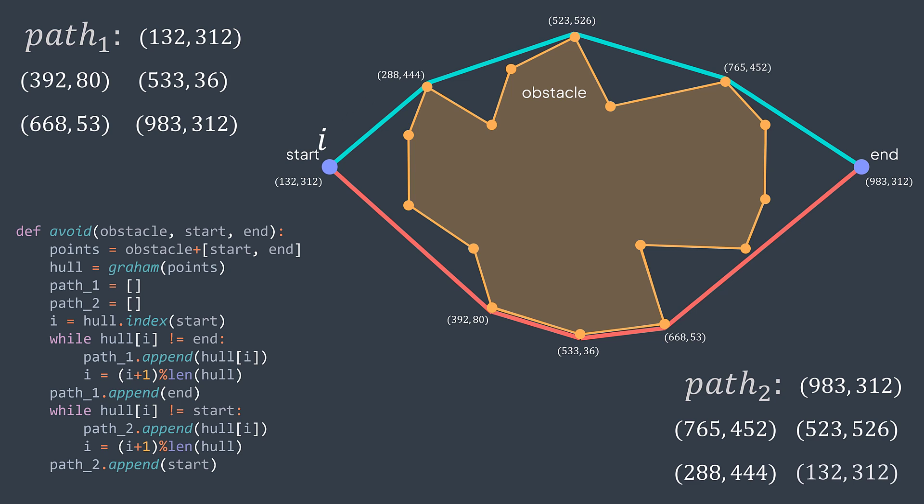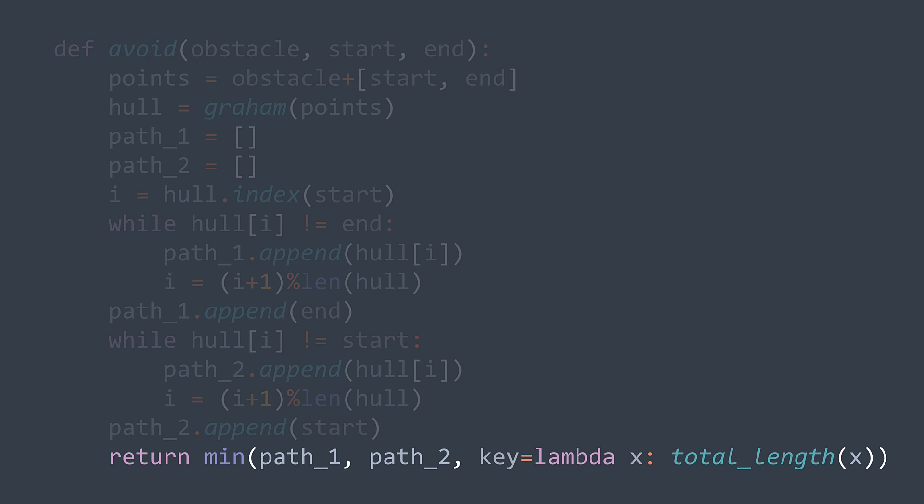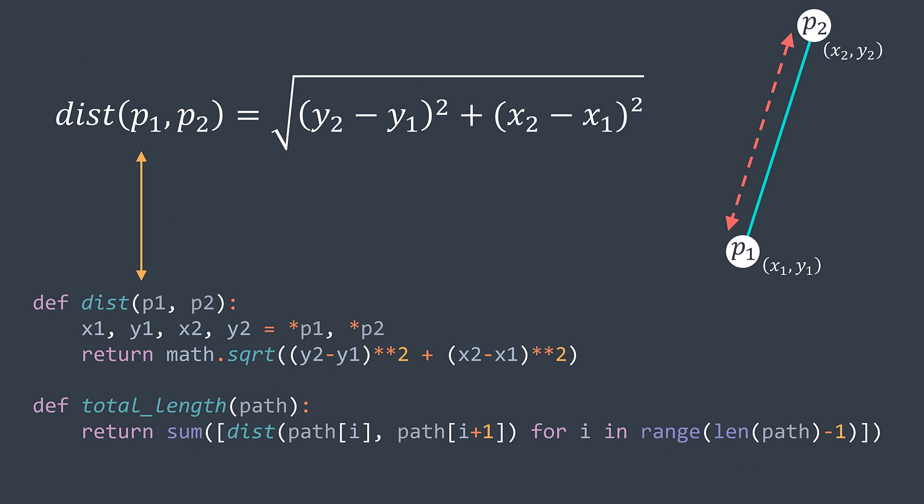Now that we have both paths, we return the minimum where the comparison key is the total length of each path. Total length function is just a function that calculates the sum of distances between each two consecutive points in a path. And we solved the problem.